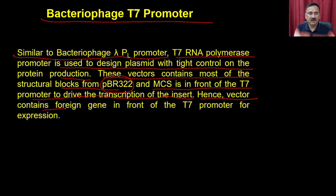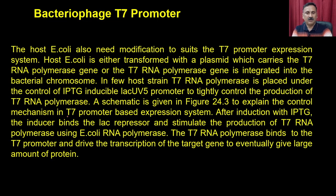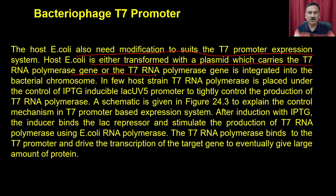For the T7 system, the host E. coli also needs modification to suit the T7 promoter. The host E. coli is transformed with a plasmid carrying the T7 RNA polymerase gene, or the T7 RNA polymerase gene is integrated into the bacterial chromosome. In some host strains, T7 RNA polymerase is placed under the tight control of the IPTG-inducible lac UV5 promoter to tightly control the production of T7 polymerase.